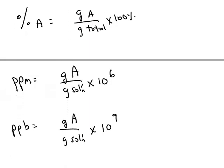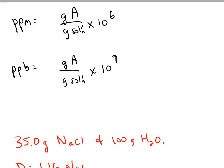And very dilute solutions are usually measured in parts per million, ppm, or parts per billion, ppb. Both of these have very similar fractions: grams of A divided by grams of the whole solution. Parts per million, you multiply by a million, 10 to the sixth. Parts per billion, you multiply by a billion, 10 to the ninth.